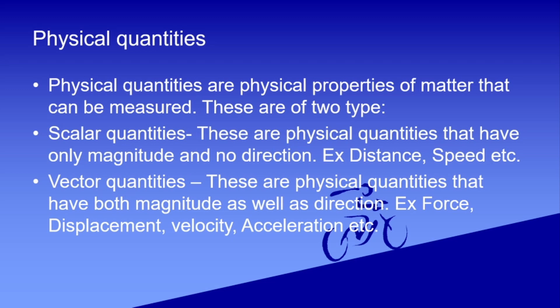First of all, physical quantities — jinko measure kar sakte hain. Physical quantities are properties of matter that can be measured. Now there are two kinds of physical quantities. The first is scalar quantity — wo quantity jismein keval magnitude hai, direction ki koi zaroorat nahi. For example, your height: you say 5 foot 8 inch — there is no direction involved. Quantities which can be specified using only magnitude are scalar quantities.